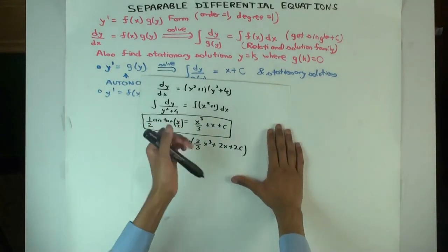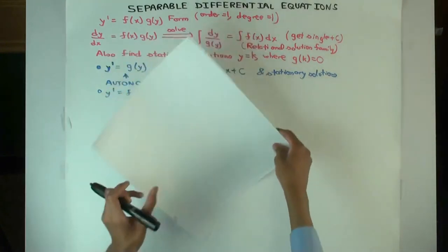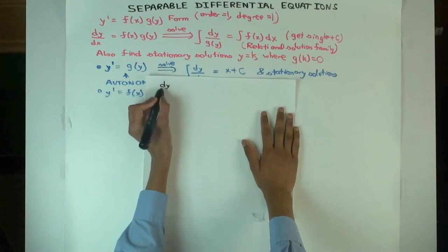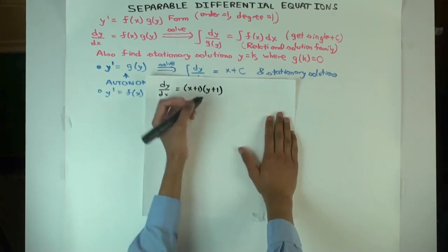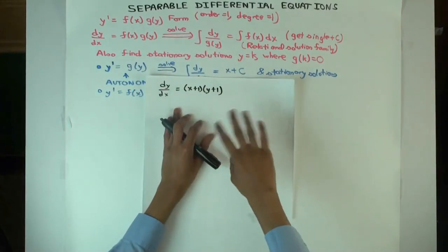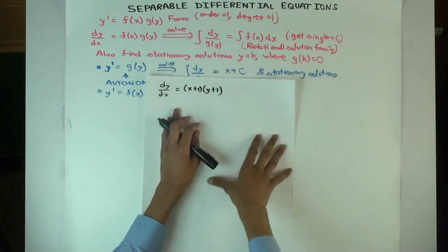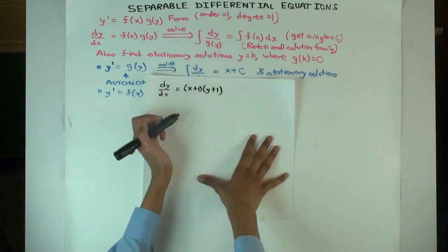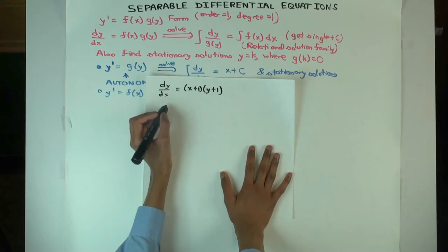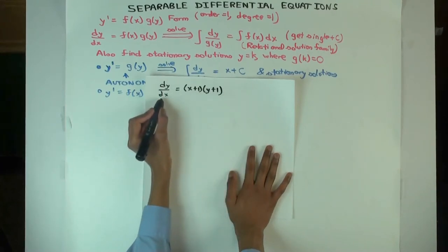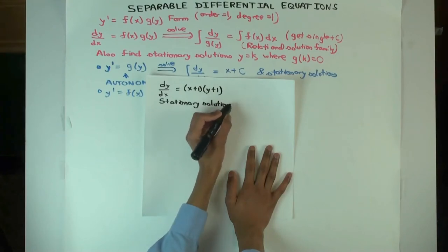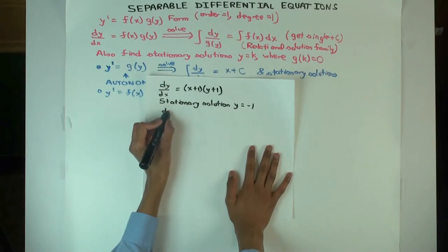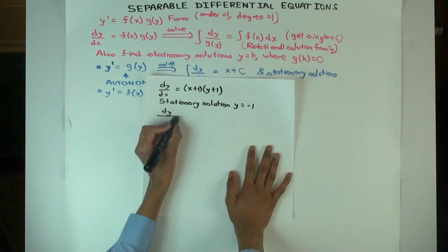Let's do another example: dy/dx = (x + 1)(y + 1). By the way, you may be given a differential equation which you need to manipulate and factorize to bring into this form. Are there any stationary solutions? Yes — y equals a constant. What constant? y = −1, since g(−1) = 0. Let's rearrange and get the general solution, trying to write it in a way that includes the stationary solution.